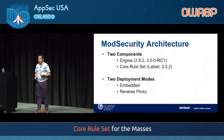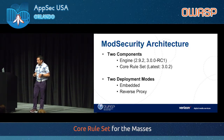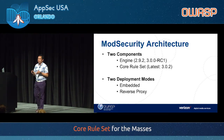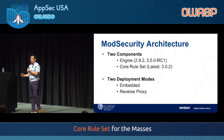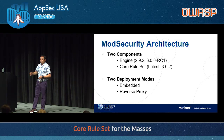There are two deployment modes. You can deploy mod security as part of your web server by installing the module on Apache, IIS, or Nginx. Or you can use it as a reverse proxy and load it onto your load balancer, SSL terminator — or in our case, we loaded it onto our CDN, which is the first point of contact between the browser or end device and the other end of the HTTP connection.